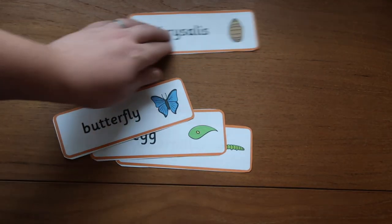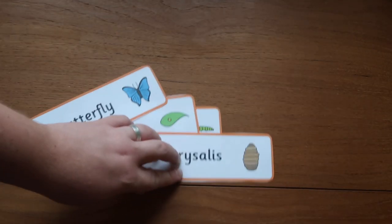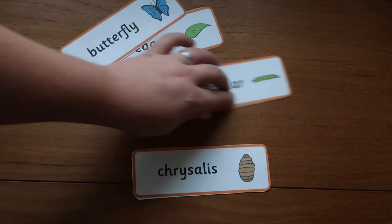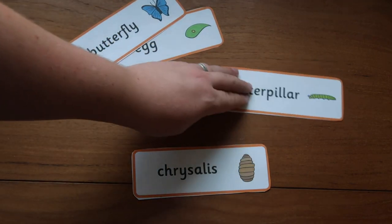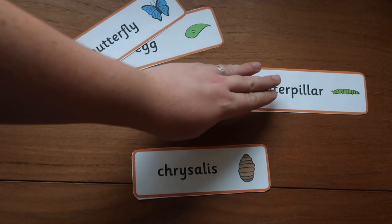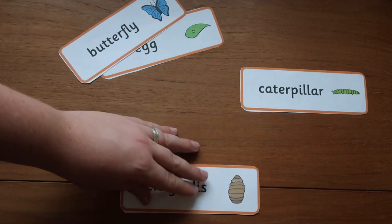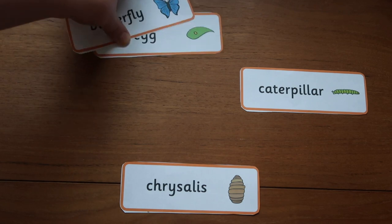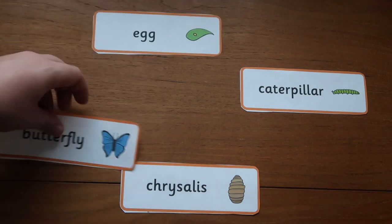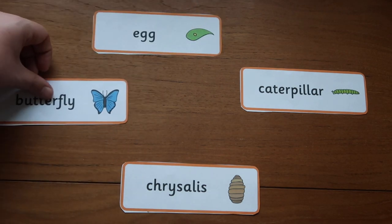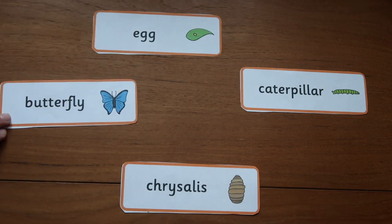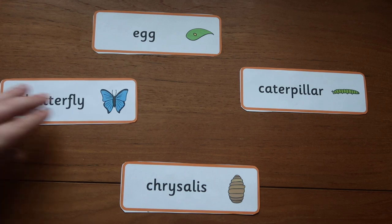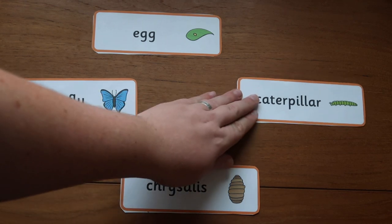As we are learning about life cycles, one of the great things you can do with these word cards is set them out in the life cycle like so. Here we have the life cycle of the butterfly. So we have the egg, the caterpillar, chrysalis, and then the butterfly.